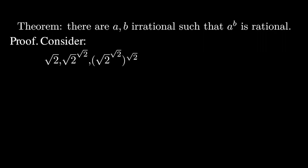Here's a theorem. There exist irrational numbers a and b such that a to the b power is rational. So again the numbers a and b have to be irrational and a to the b must be rational. We have to come up with such an example.